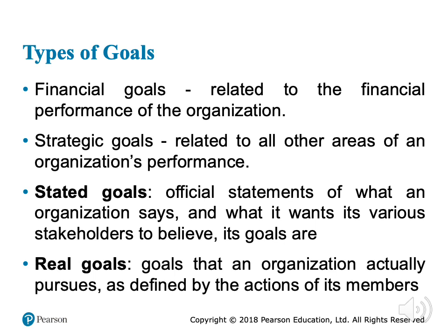We have four types of goals and eight types of plans — do not confuse them. The first type of goal is financial goals, which are all goals related to the financial performance of the organization. For example, achieving a monthly income of 50,000 Egyptian pounds is a financial goal. The second type is strategic goals, related to all other areas of organizational performance rather than financial performance. For example, reaching 10% market share in the coming year is a strategic goal.